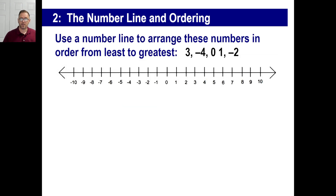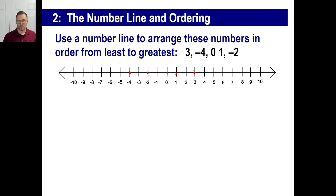Using number lines, you can arrange numbers from least to greatest. All you need to know is that if a number is to the left of another number on a number line, the number farther to the left is smaller. For example, with three, negative four, zero, one, and negative two, we can see on the number line the order is: negative four, negative two, zero, one, three.